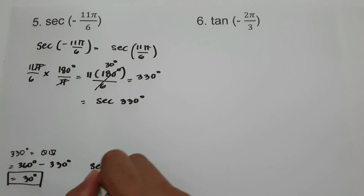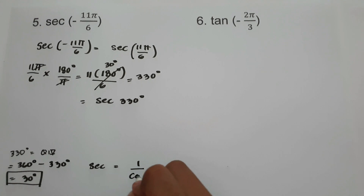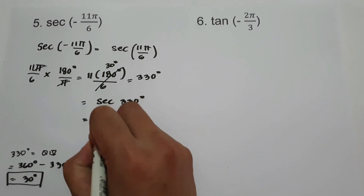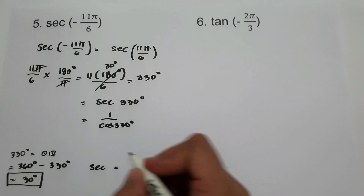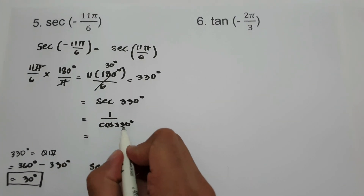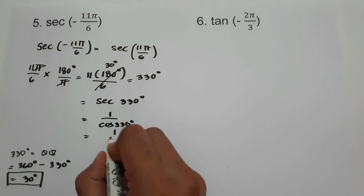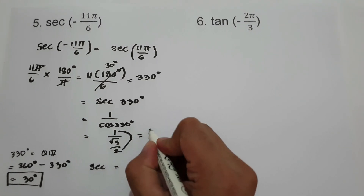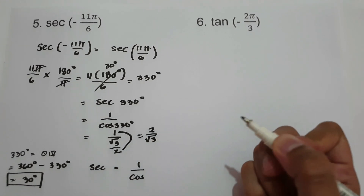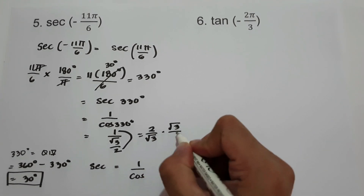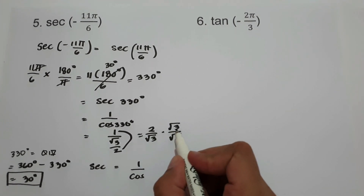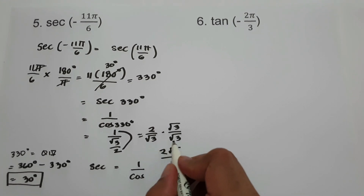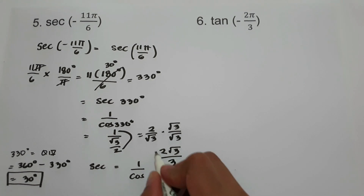We know that secant equals 1/cosine. So secant(330°) = 1/cosine(330°). Cosine(330°) in quadrant 4, with reference angle 30°, is √3/2. So we have 1/(√3/2) = 2/√3. Rationalizing by multiplying numerator and denominator by √3: 2√3 / (√3 × √3) = 2√3 / √9 = 2√3/3. And this will be our answer.